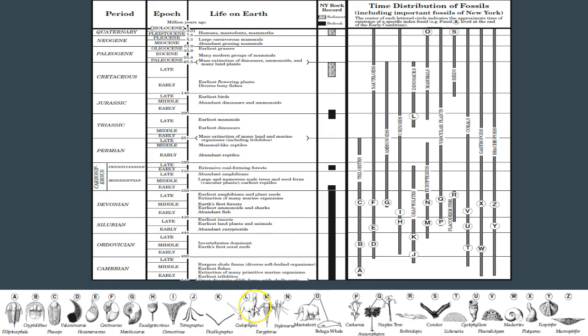Here we have our index fossils, and let's start with an easy one - we have L. He looks like a dinosaur. So L is a dinosaur. Right here you can see L on your table. Now, if you were asked when did this organism exist, you would say in the late Triassic. That's when this organism existed. You can see this bar graph says dinosaurs - L is one of the dinosaurs. L in particular, though, existed during the late Triassic.